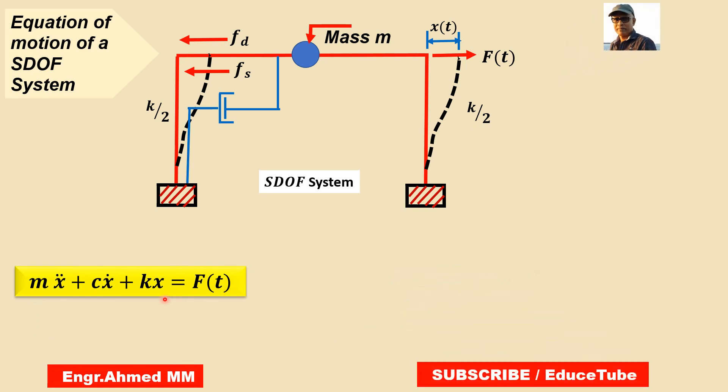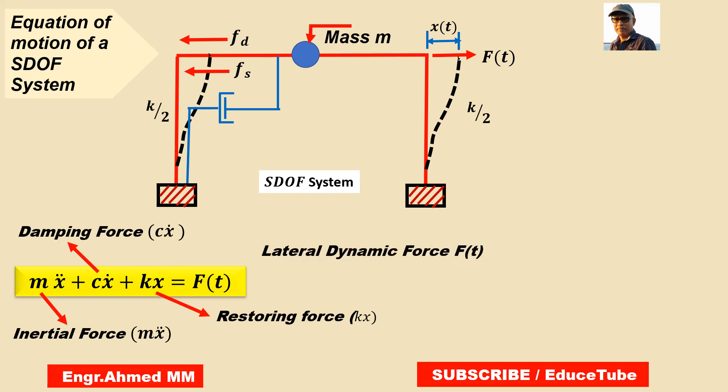This is our equation of motion of a single degree of freedom system. Now this M x double dot is the inertia force. The second term is the damping force. The third term is the restoring force. And Ft is the lateral dynamic force.